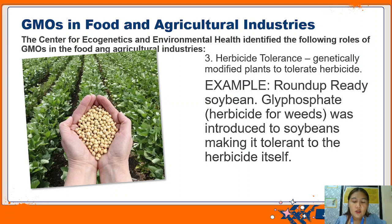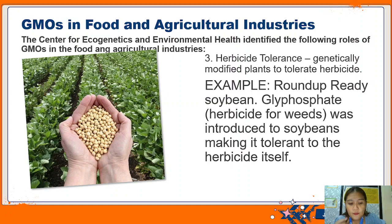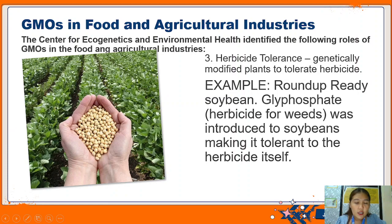Number three is herbicide tolerance - meaning genetically modified plants are modified to tolerate herbicides. An example is the Roundup Ready soybeans. The herbicide glyphosate is used for weeds. An herbicide is a substance that is toxic to plants. It was introduced to soybeans making the soybeans tolerant to the herbicide itself. So farmers can spray herbicides that kill the weeds but not the soybeans, used to destroy unwanted vegetation.